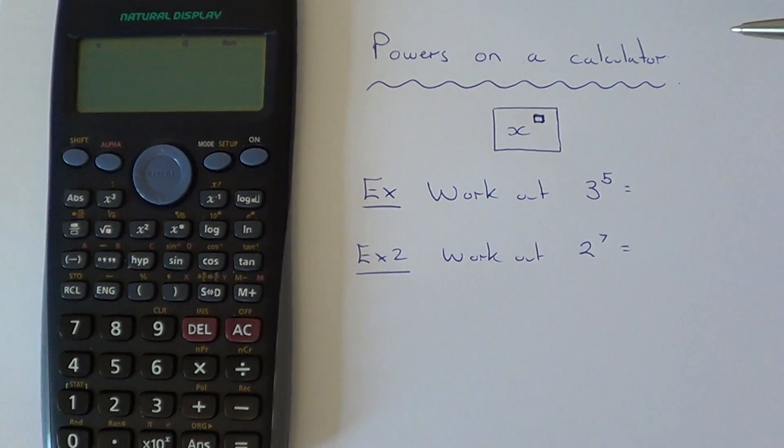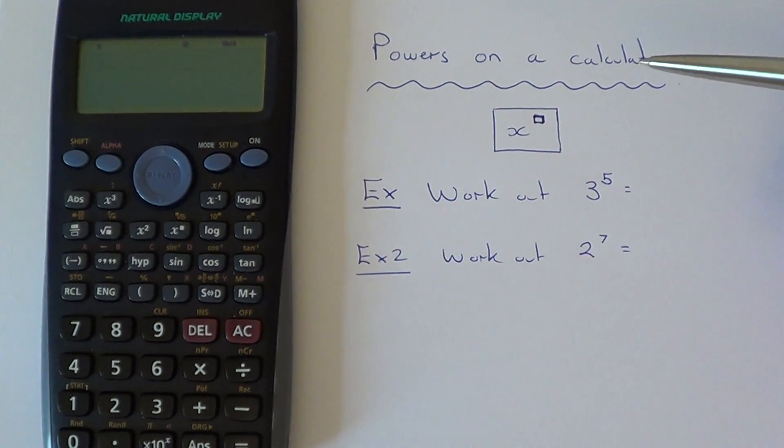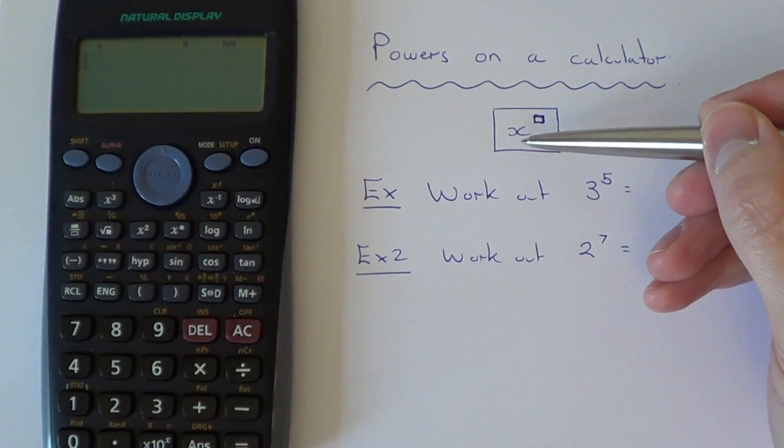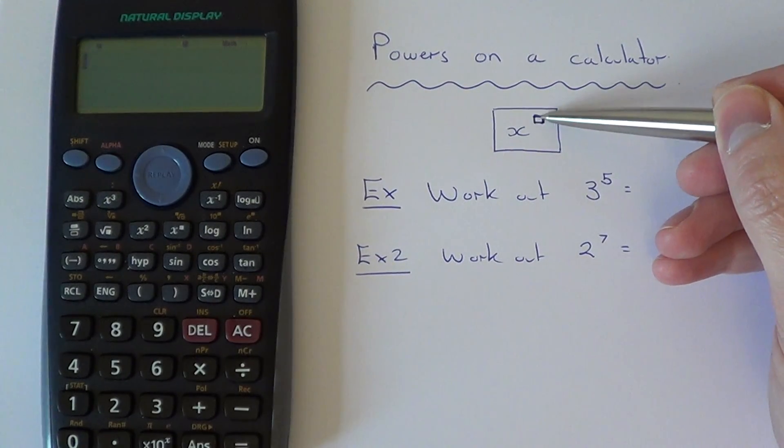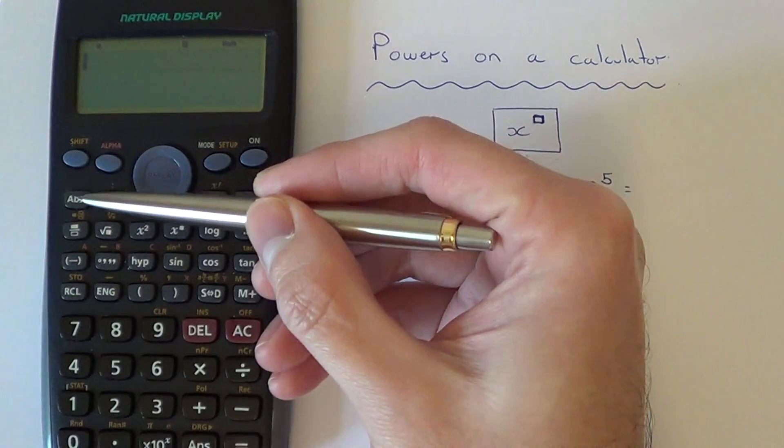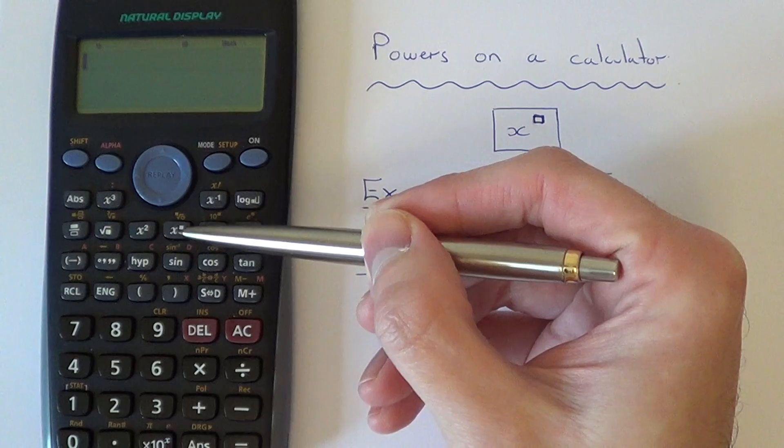Hi, today I'm going to show you how to work out powers on a Casio Scientific Calculator. The button you'll be looking for is x to the power of something. You'll find this on the second row down and it's the fourth key in.